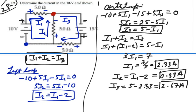So it is true that I1 plus I2 equals I3, but we're focused in on I1. That is the current in the 10 volt EMF: 2.33 amps. That's our answer.